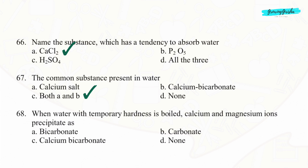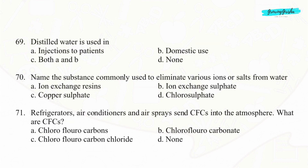Question 68. When water with temporary hardness is boiled, calcium and magnesium ions precipitate as Option C: Calcium bicarbonate.